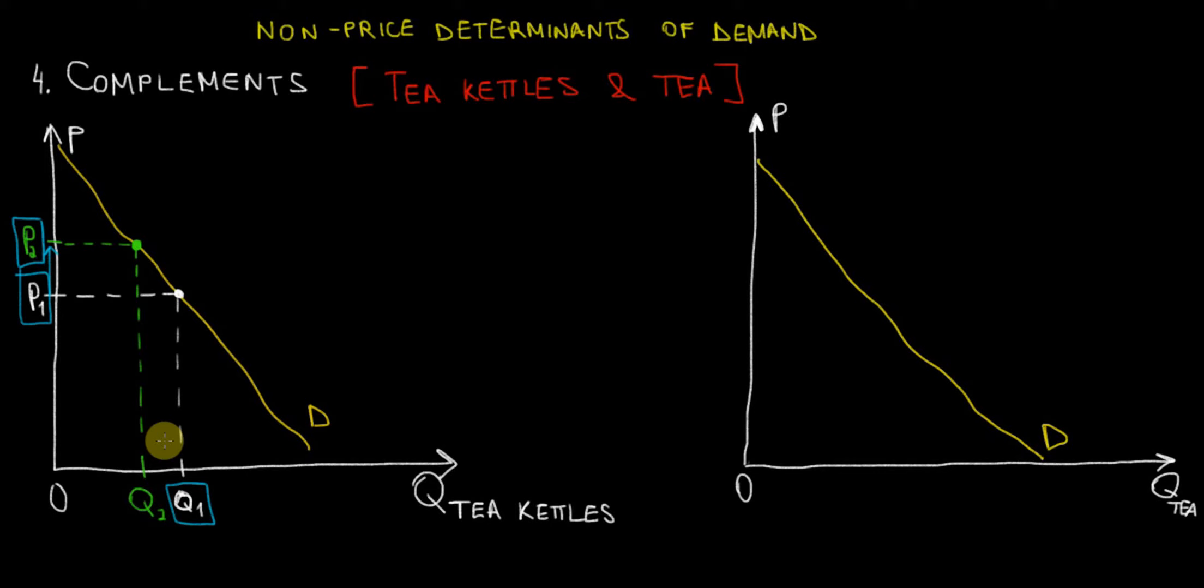This is going to affect the demand curve for tea because tea is complementary to tea kettles. If the quantity demanded for tea kettles decreases, there is a movement along the curve for tea kettles. This will cause a shift in the demand curve for tea to the left.